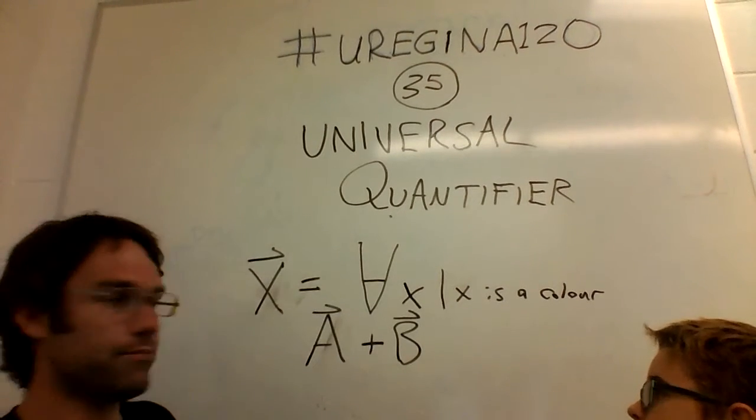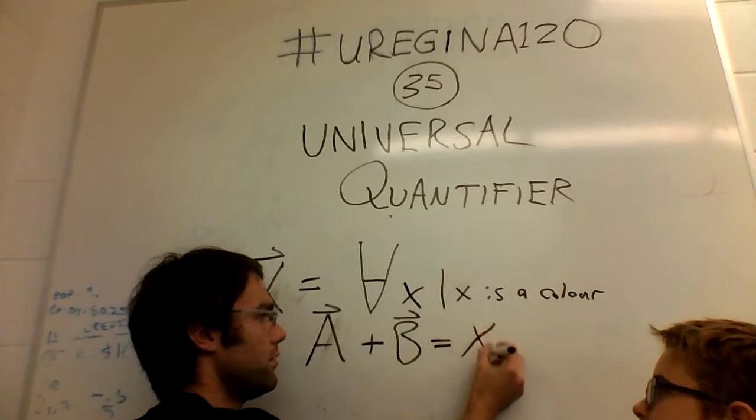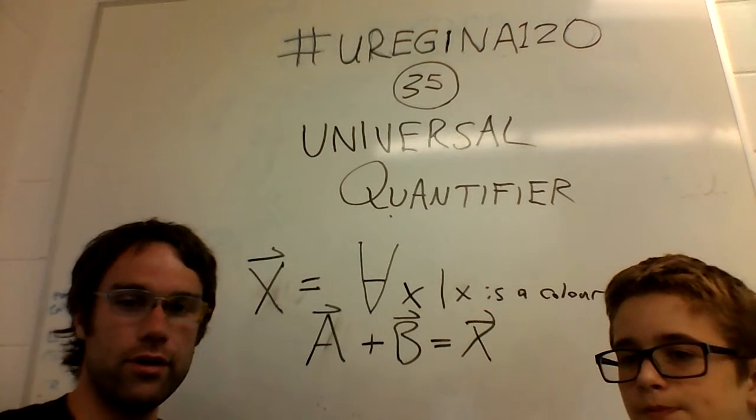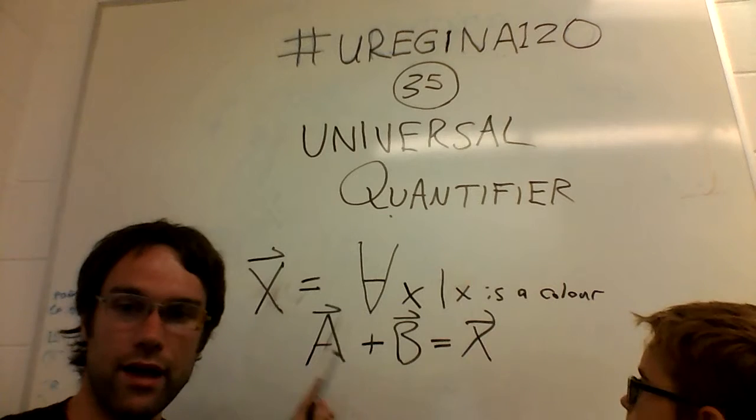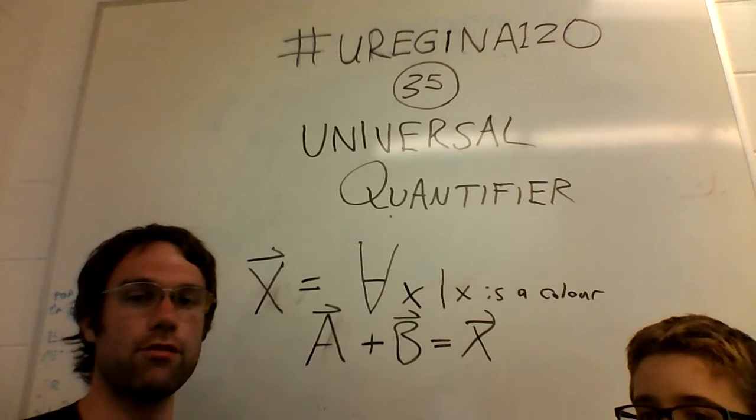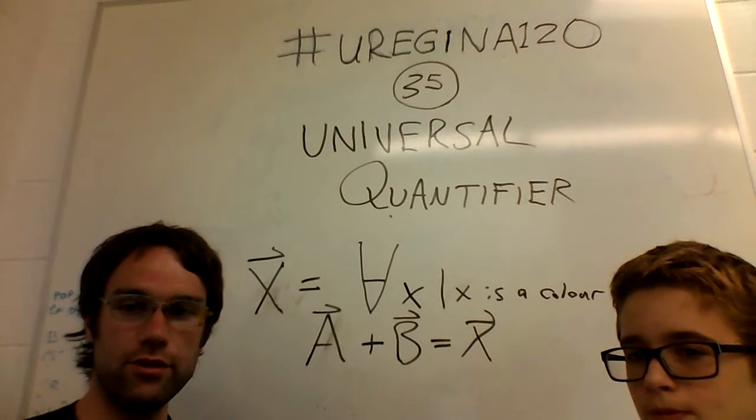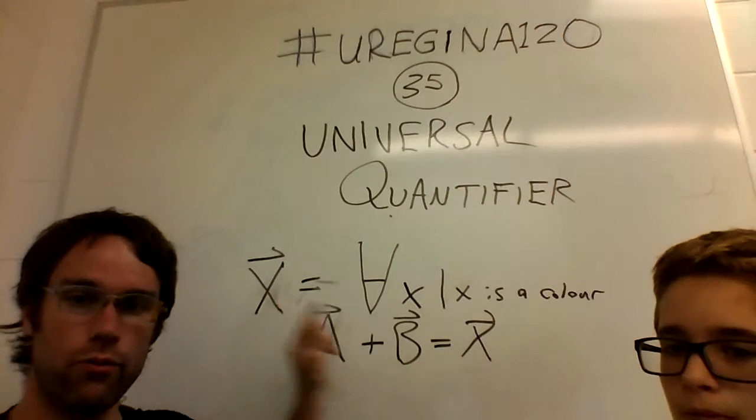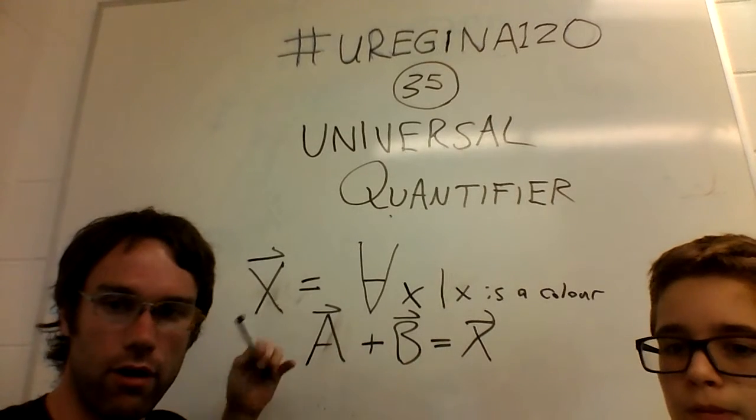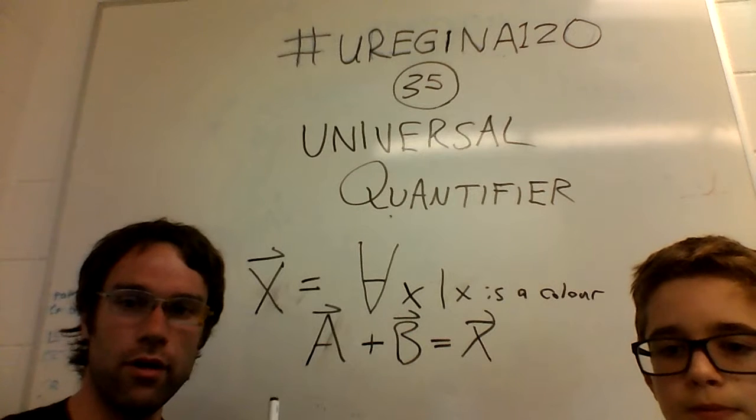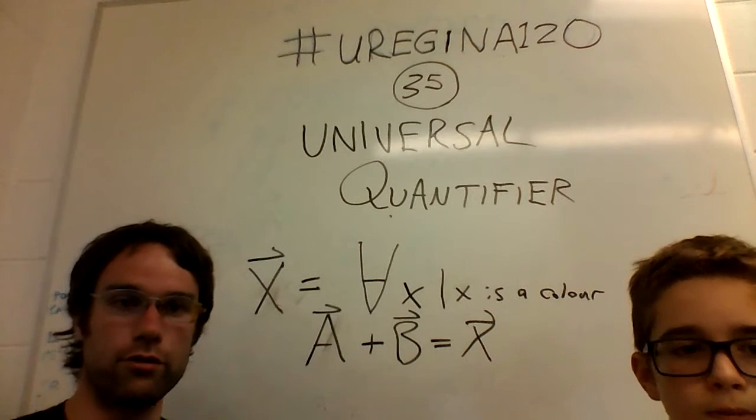And so, you could have equations like this, where it would mean something adds up to the set of all colors, and you could kind of split things apart using that. I'm not going to get too deep into that. The important thing, again, to note is just to know what this is. What it means to have all of a set, or all types of things, or all of a group.